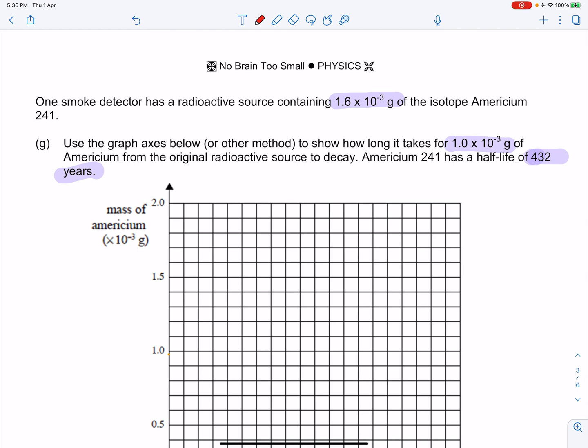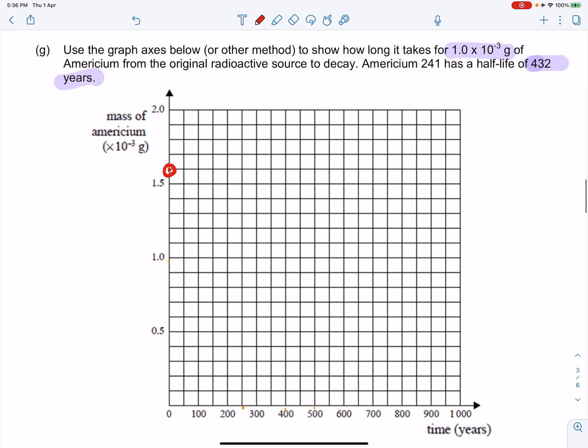You're starting with 1.6 × 10^-3, so at time zero you've got 1.6. Half of 1.6 is 0.8, so after 432 years you get 0.8, which is somewhere here on the graph.